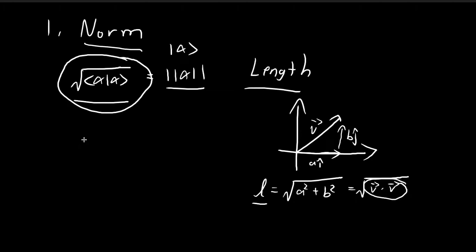If the norm of a vector is equal to 1, then I would say that this is a normalized vector. That is some important terminology to know.